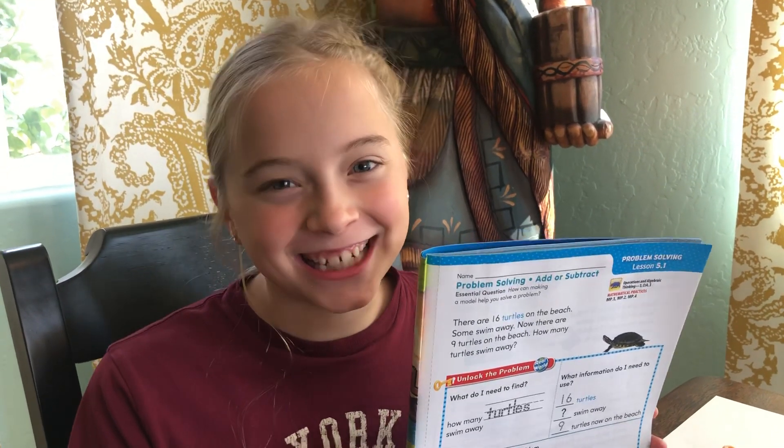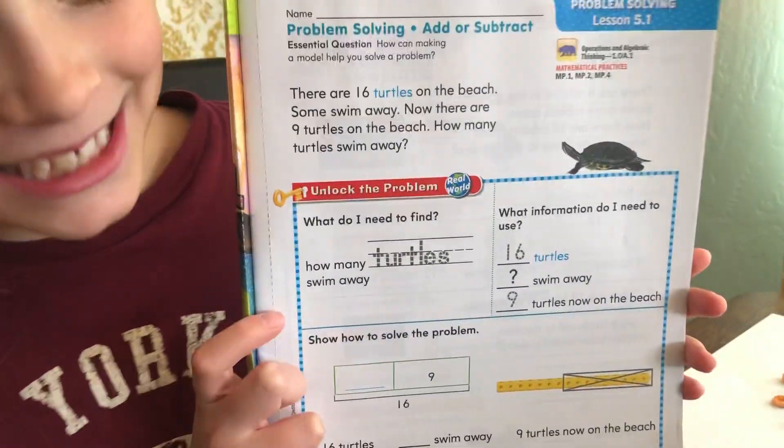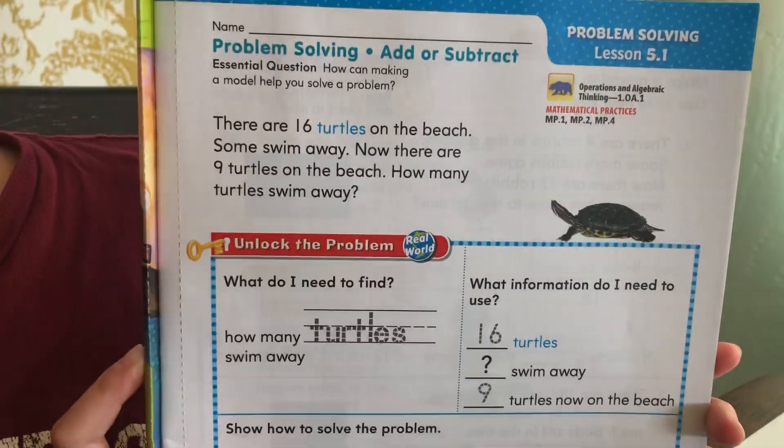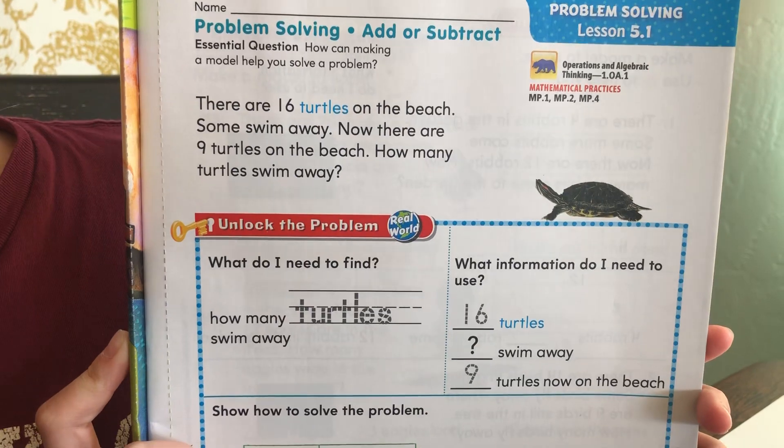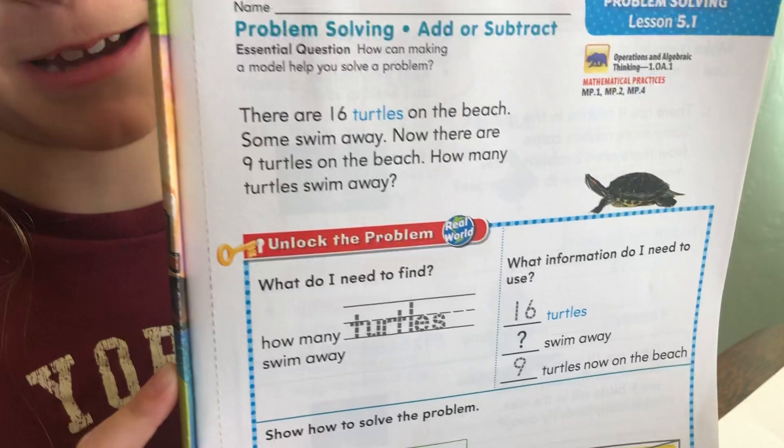Hi boys and girls, this is Gwen and today I'm gonna be helping you with lesson 5.1. It says, there are 16 turtles on the beach. Some swam away. Now there are 9 turtles on the beach. How many turtles swam away?